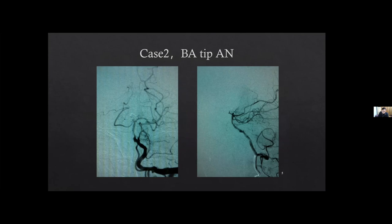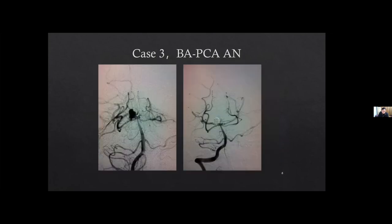This is a basilar tip aneurysm, also treated with stent-assisted coiling, achieving a perfect result. Another case — a basilar tip and PCA P1 segment aneurysm — was ruptured, you can see the blister sac on the dome, and we used stent-assisted coiling to achieve a perfect result.